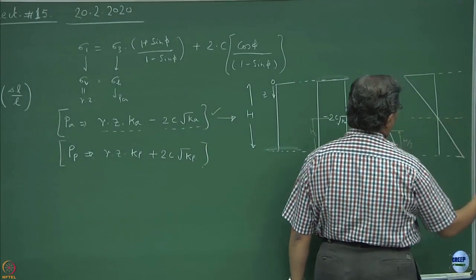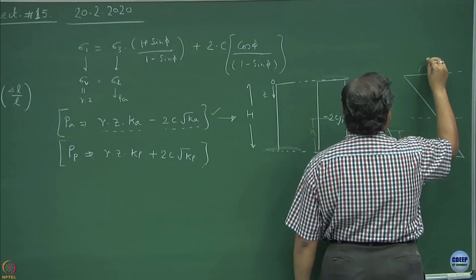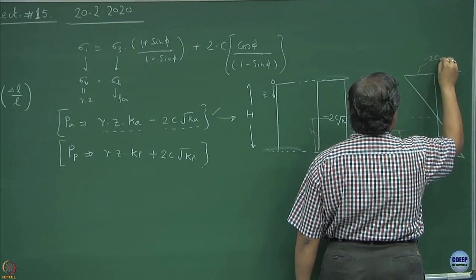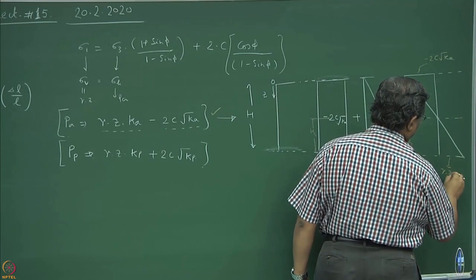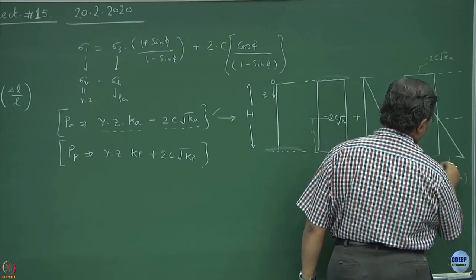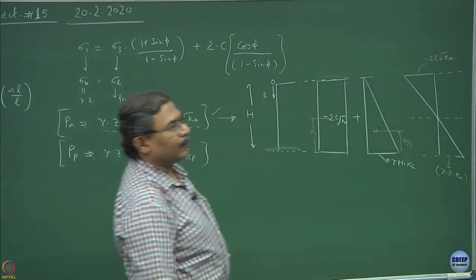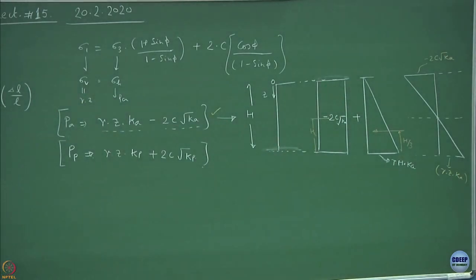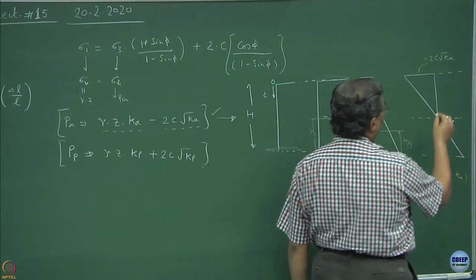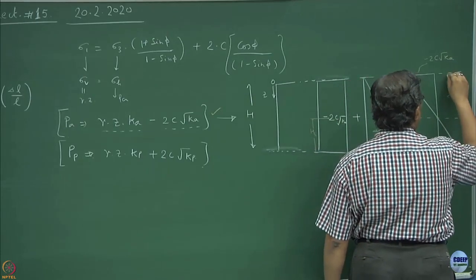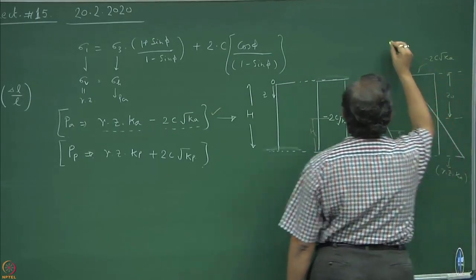What is happening in soils is that because of the cohesion being mobilized in the soil mass, there is a tendency for a tension crack to develop. This is the z0 value — defined as the depth of the tension crack.